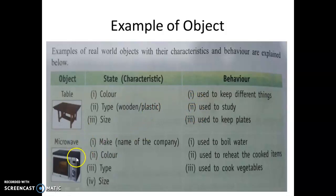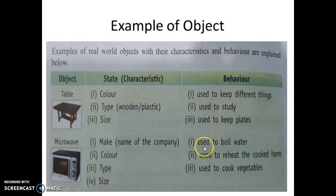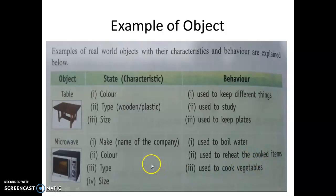Let's take another example: Microwave. Microwave characteristics are name of the company, color, type, size, maybe price. These are the characteristics of one Microwave. And Behaviour — the uses of a Microwave are its behaviour. Suppose it is used to boil water, used to reheat cooked items, used to cook vegetables. These are the behaviour of a Microwave. So with all together some characteristics and behaviour, they form one object.